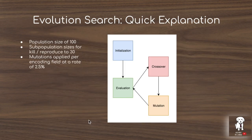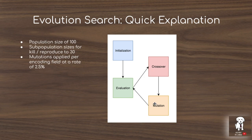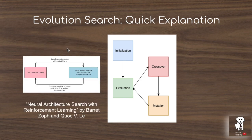The evolutionary search begins with initialization — seeding the search with the Transformer architecture — then evaluates models by training them and measuring a fitness function, in this case perplexity on a held-out validation set. New models are formed through mutation of the genetic code. The initial search uses a population size of 100, subpopulation sizes of 30, and a mutation rate of 2.5% as it parses through the genetic code.